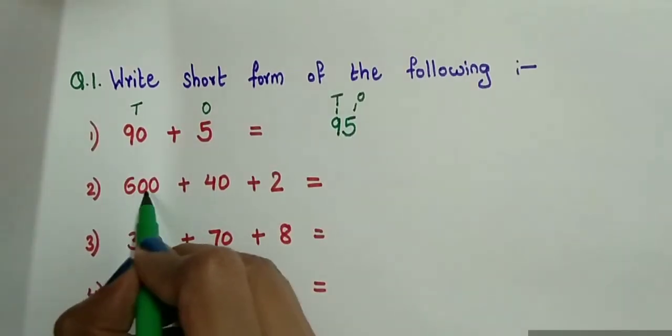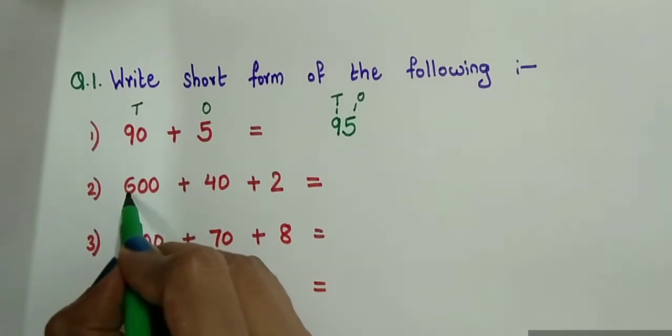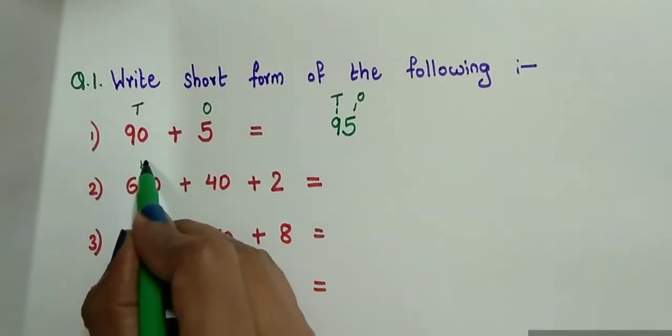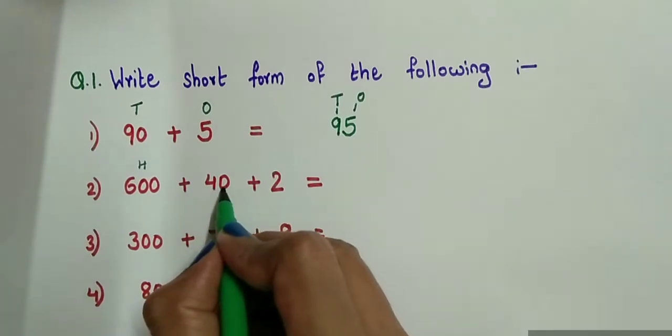Next is 600. These 2 zeros express that 6 is at 100's place and 40, this zero expresses that 4 is at 10's place.